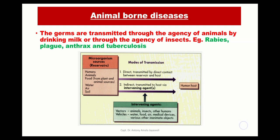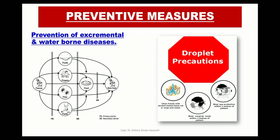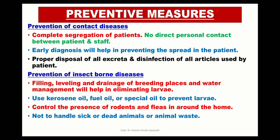These can be prevented by ensuring water is properly boiled before consuming. We should clean our hands with a hand-based sanitizer or soap and water regularly. Once we have an infection, we should wear a mask while going out. To prevent contact diseases, avoid direct contact with infected people, and proper diagnosis will help in preventing the spread of disease. Insect-borne diseases can be prevented by leveling breeding places of mosquitoes and ensuring no waterlogged areas are nearby. Kerosene oil or fuel oil can be used to prevent the growth of mosquito larvae.